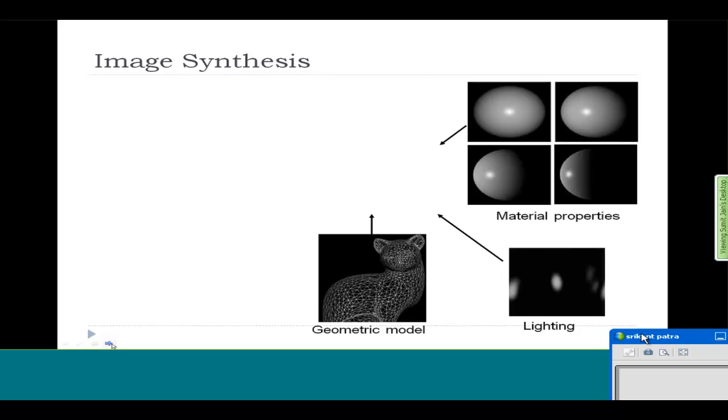Then you define the material properties of the object. For example, if you have a new cricket ball, it will be shiny. We call such objects a specular object and you see some small highlights due to the shine.